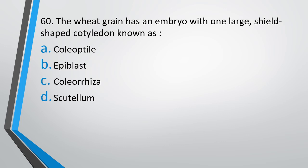Question number 60. The wheat grain has an embryo with one large shield-shaped cotyledon known as: coleoptile, epiblast, coleorhiza, or scutellum? The correct answer is Option D, scutellum.